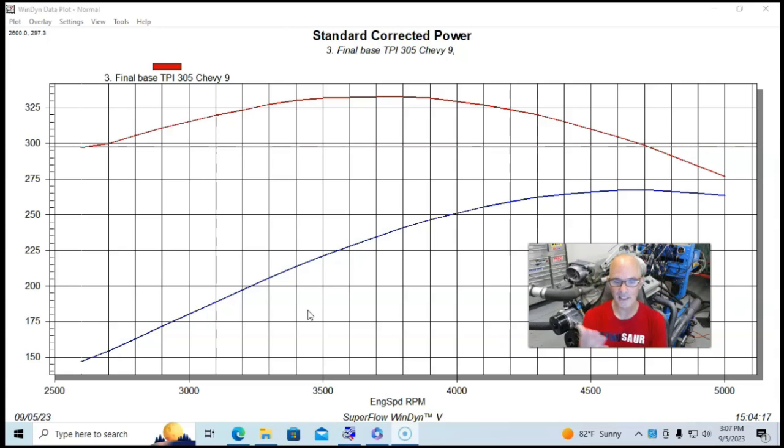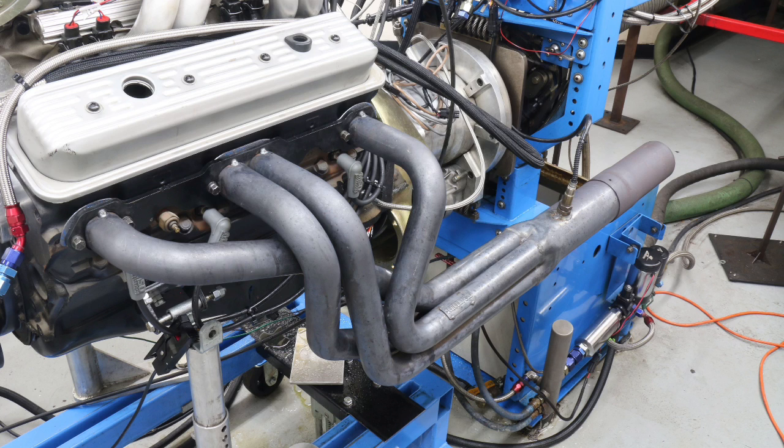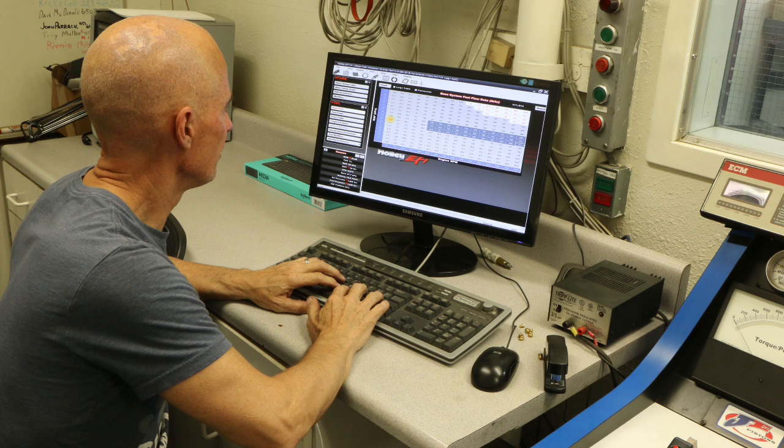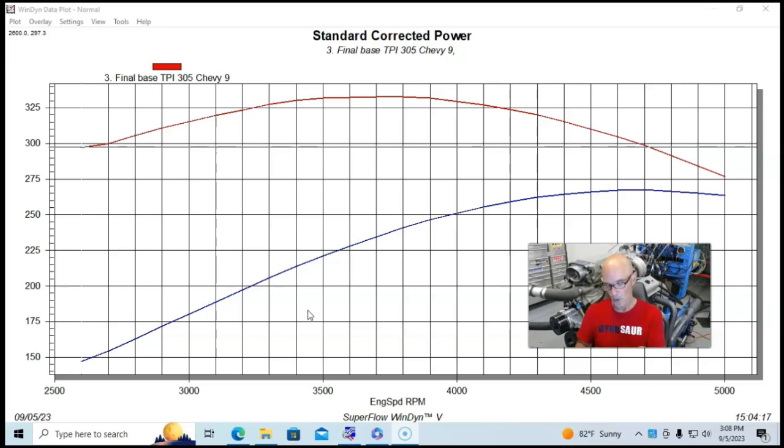So we started out with a tune port LB9 305, and we ran it basically in stock trim. Now, we did run it with long tube headers, we ran it with no accessories, we had an optimized tune on it with no air inlet system and a good exhaust, so with the headers and open exhaust, no accessories, no air inlet, and an optimized tune, and we also run a little bit colder.